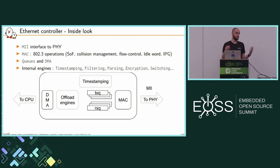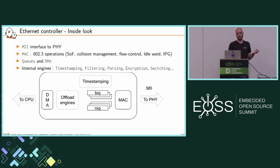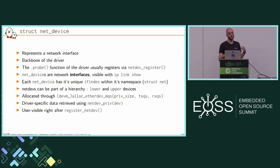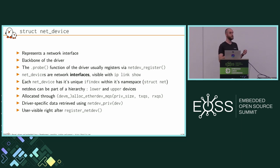I'll focus on internal kernel structures and important API bits. The backbone of a typical Ethernet driver is the struct net_device. You create it in your probe function, do some initialization, and register it with the network subsystem. Once registered, it becomes a visible interface from user space — appearing when you run 'ip link show' or 'ifconfig'. These net devices have a name, an IF index, and represent network interfaces within the kernel.